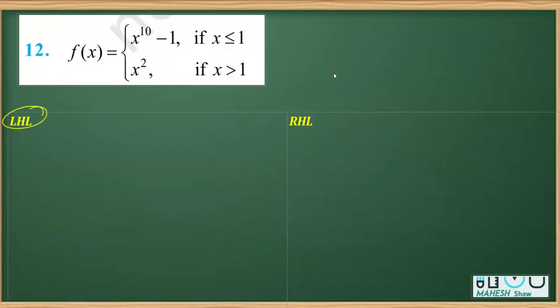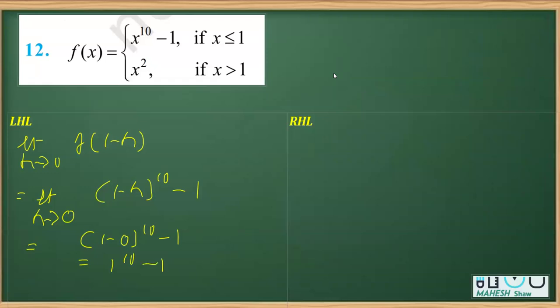We'll be first finding out the LHL. For that, I'm taking limit h tends to 0, f(1 minus h). If I replace x with 1 minus h, we are going to get (1-h) raised to the power 10 minus 1. If I plug in the value of h as 0, we get (1-0) raised to the power 10 minus 1, that is 1 raised to the power 10 minus 1. So it's 1 minus 1, that is equal to 0.